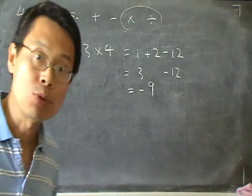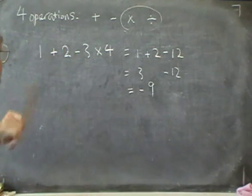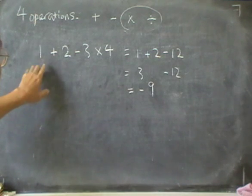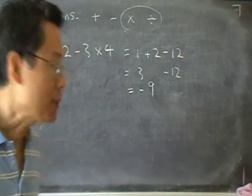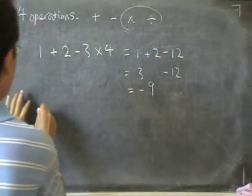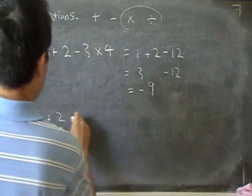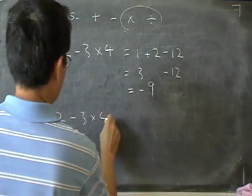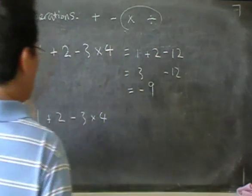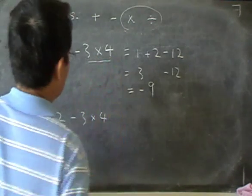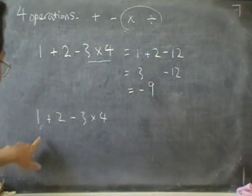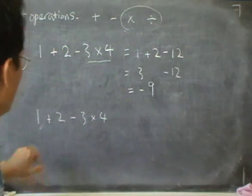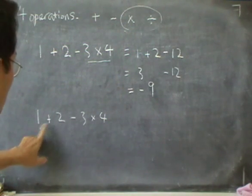Now, what happens if we don't follow this rule? If you don't follow this rule, if I just start from the left and work to the right, let's see what happens. Just now I did the 3 × 4 first. But now, let's see what happens if I ignore the order and I start with the 1 + 2.